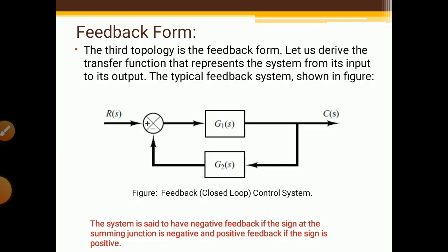What is feedback form? The third topology is the feedback form. We have seen in an earlier video that the first topology is the series form and the second topology is the parallel form. Now this third topology is the feedback form. Let us derive the transfer function that represents the system from its input to its output. The system is said to have negative feedback if the sign at the summing junction is negative, and positive feedback if the sign is positive.